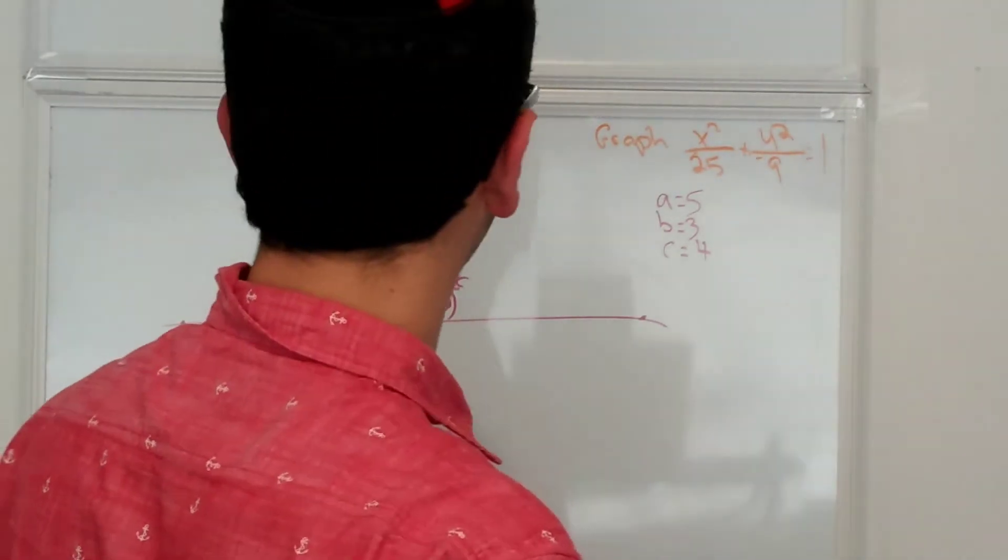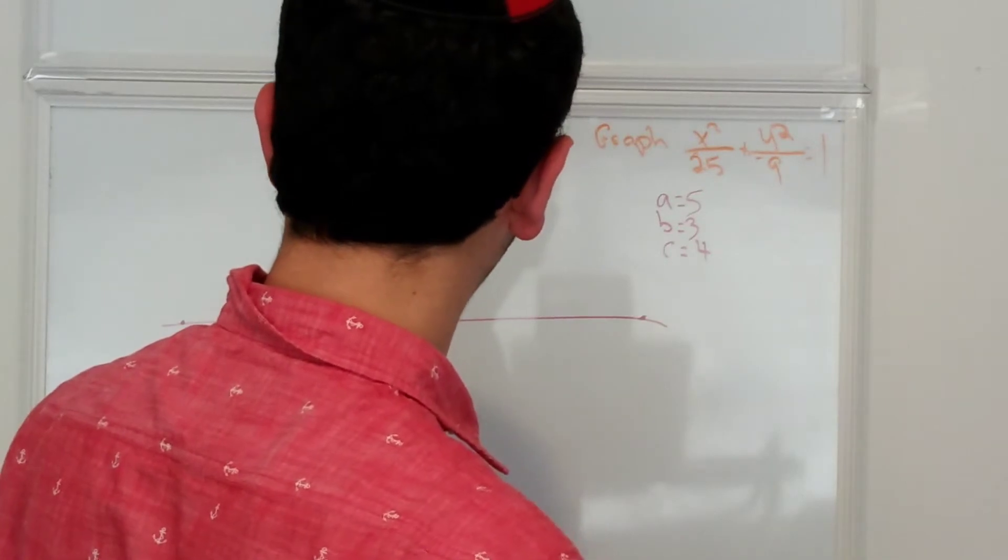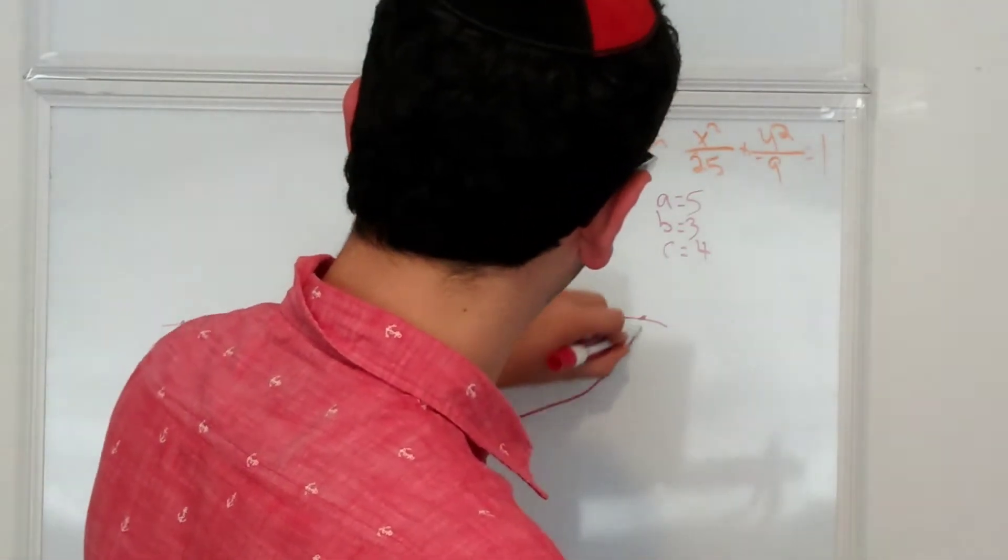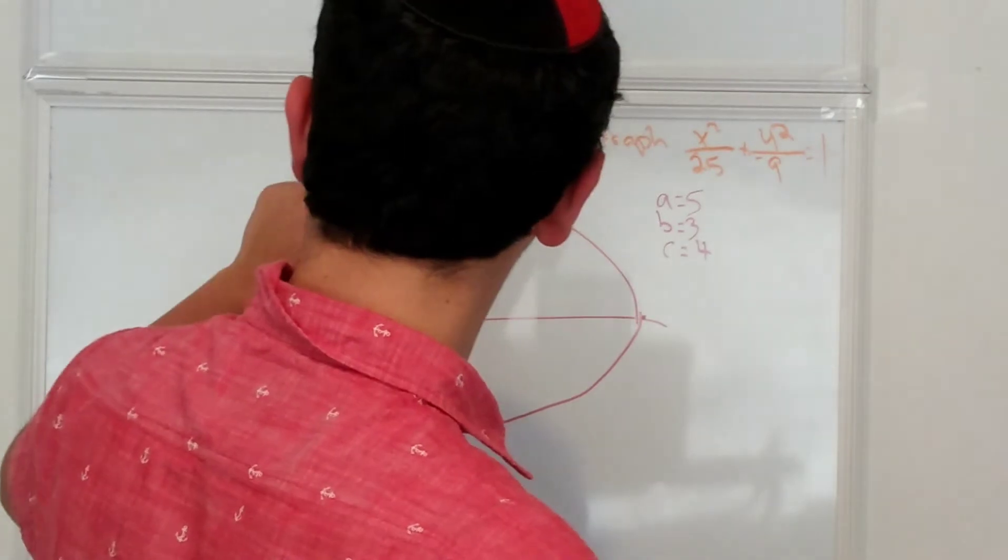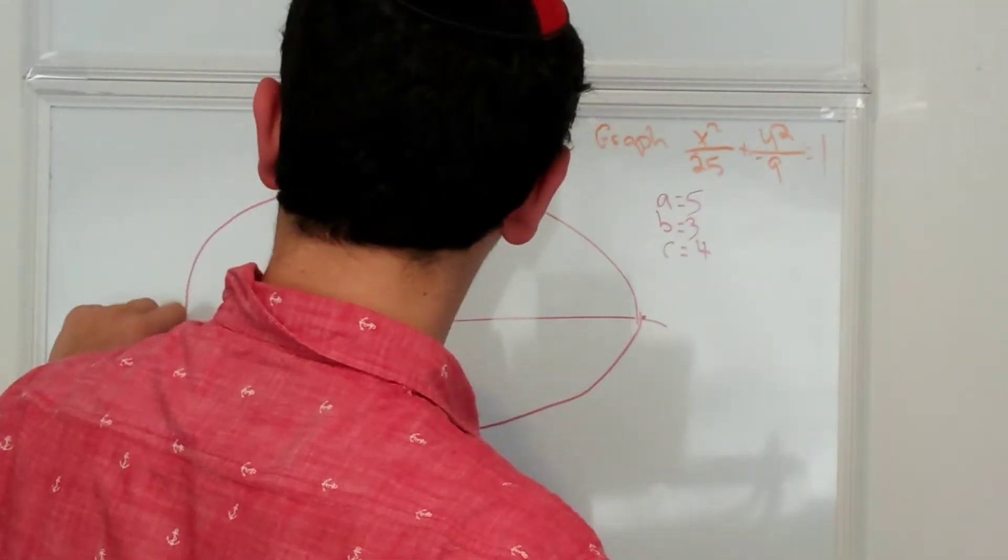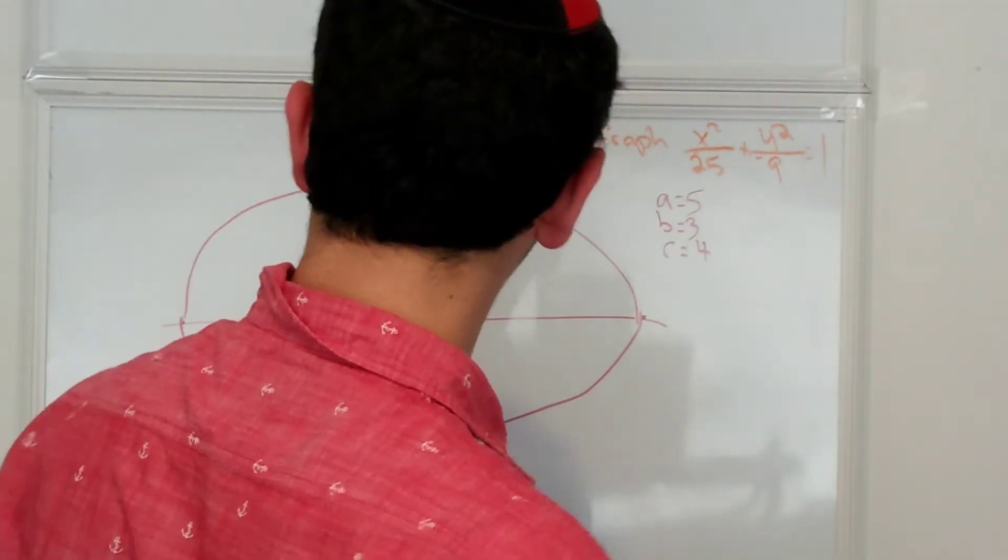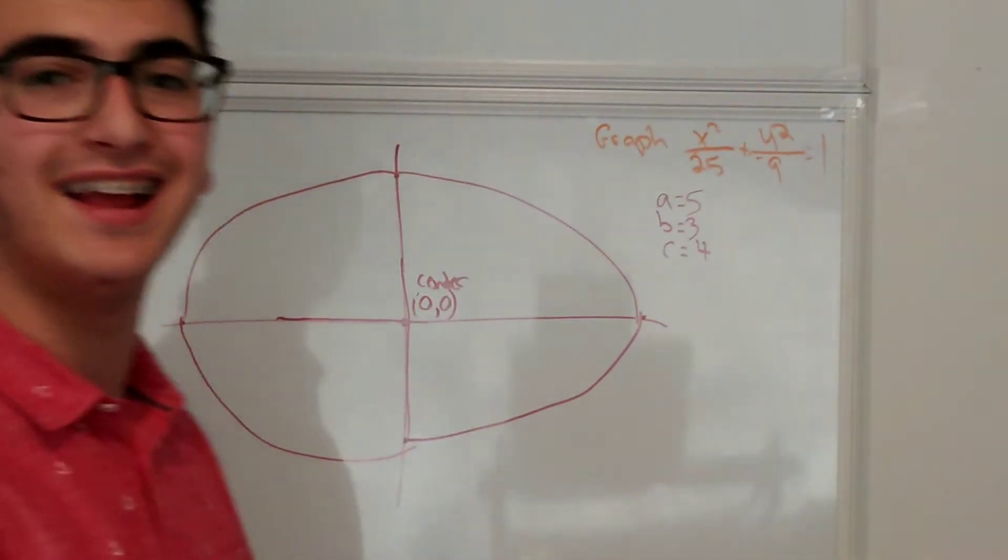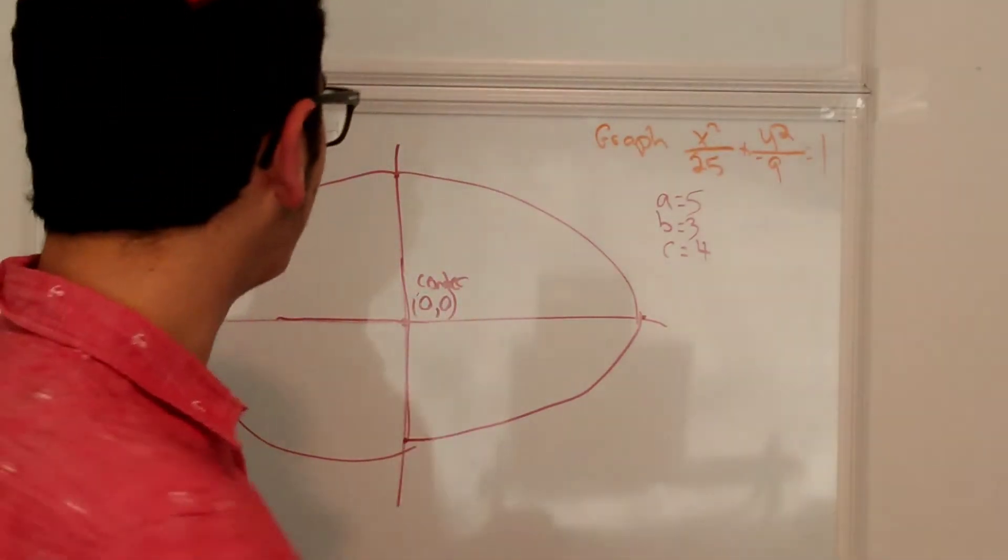Okay, so we can go ahead and we can connect these together. That one's not that good. Looks like a gorgeous ellipse.